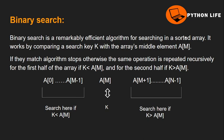Binary search works on a sorted array. It is an efficient algorithm because it works by comparing a search key with the array's middle element.